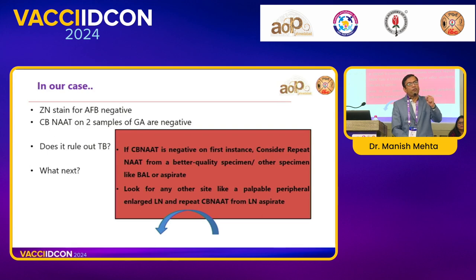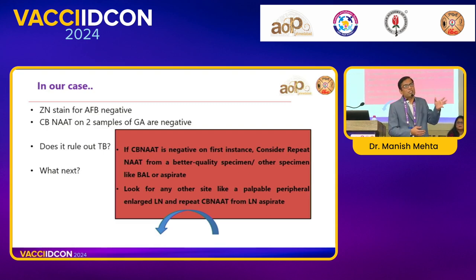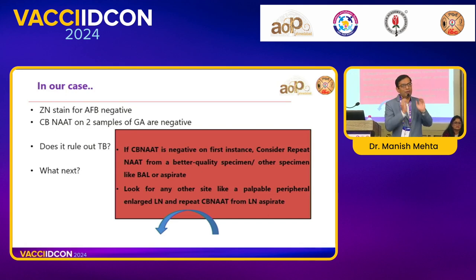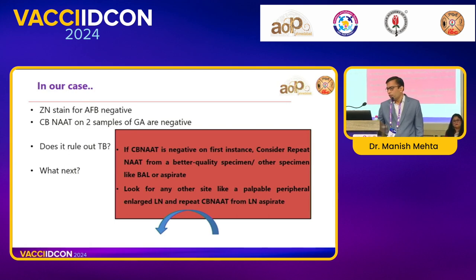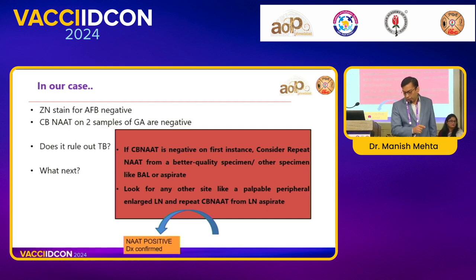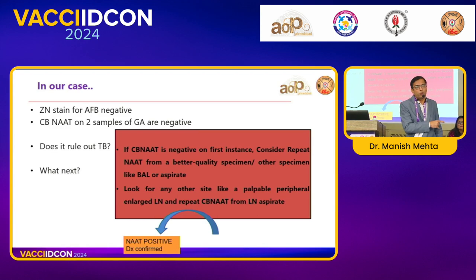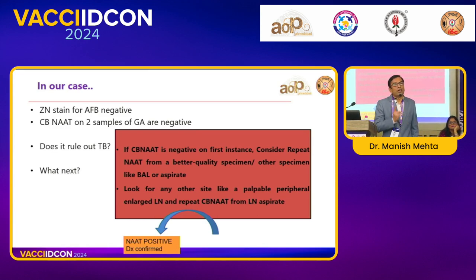If CBNAAT is negative, look for other sites and better quality specimens — lymph node sample, fluid, pleural biopsy. Try every effort: gastric lavage, induced sputum, all available samples. If CBNAAT comes positive, treat as tuberculosis. If it is still negative despite all efforts, and you strongly feel this is tuberculosis, only then can you treat as a clinically diagnosed case of tuberculosis — not before doing all this homework. If the child is not improving and diagnosis is still not confirmed, then consider clinically diagnosed TB and seek expert opinion.